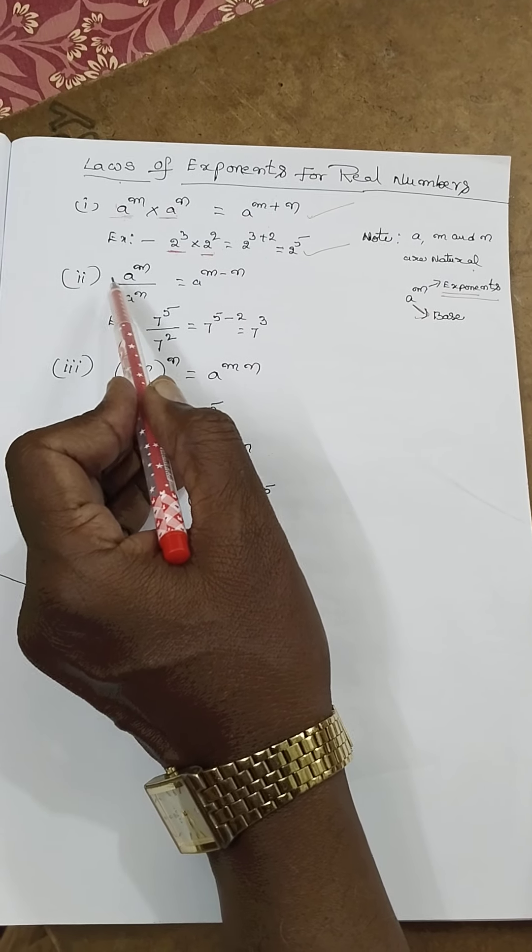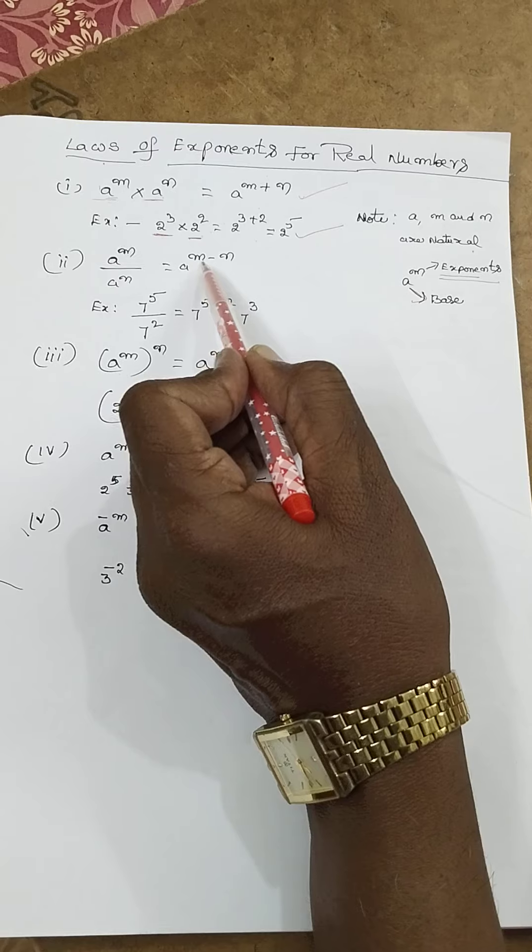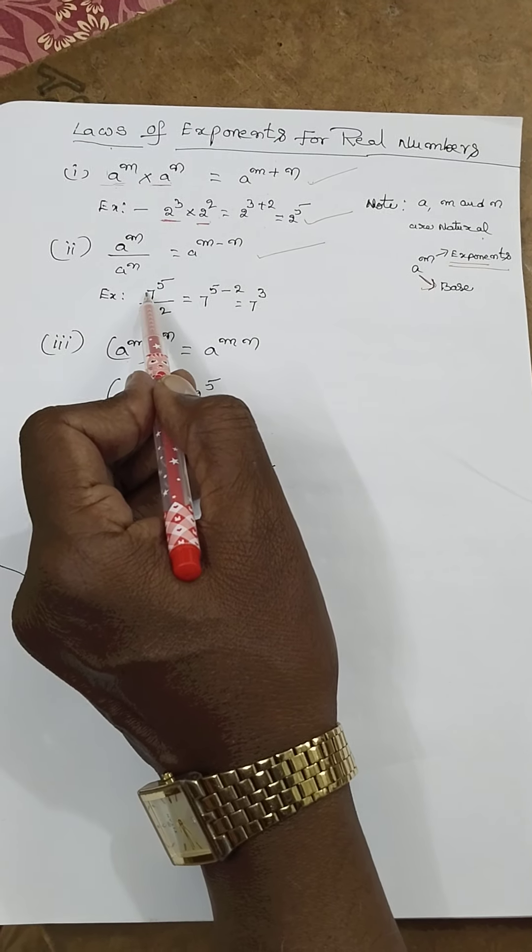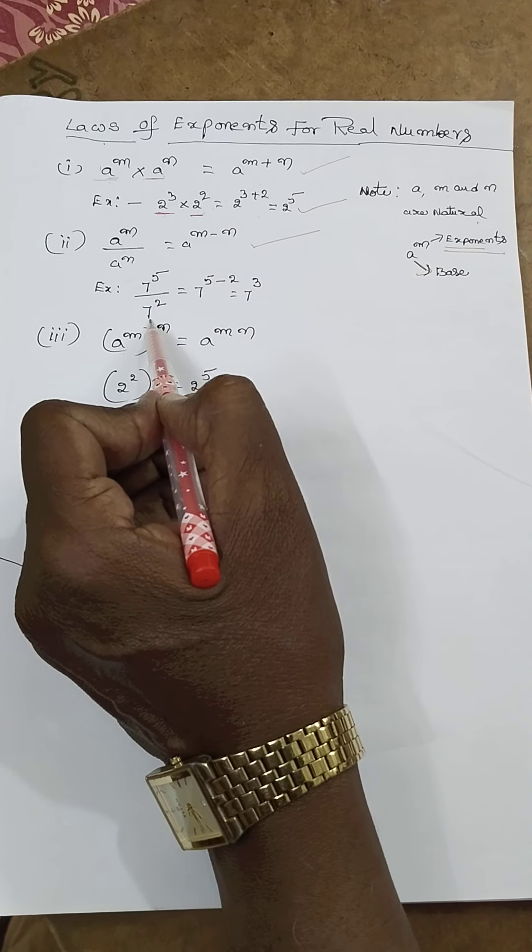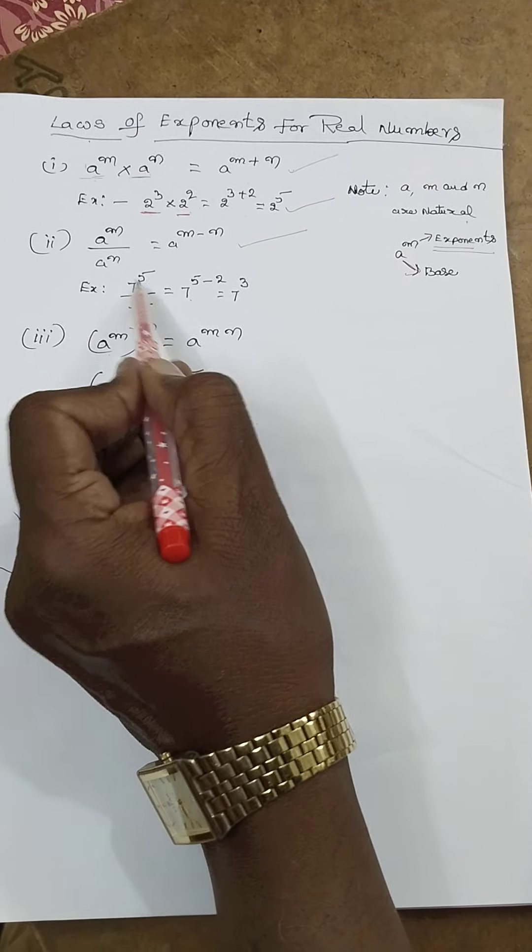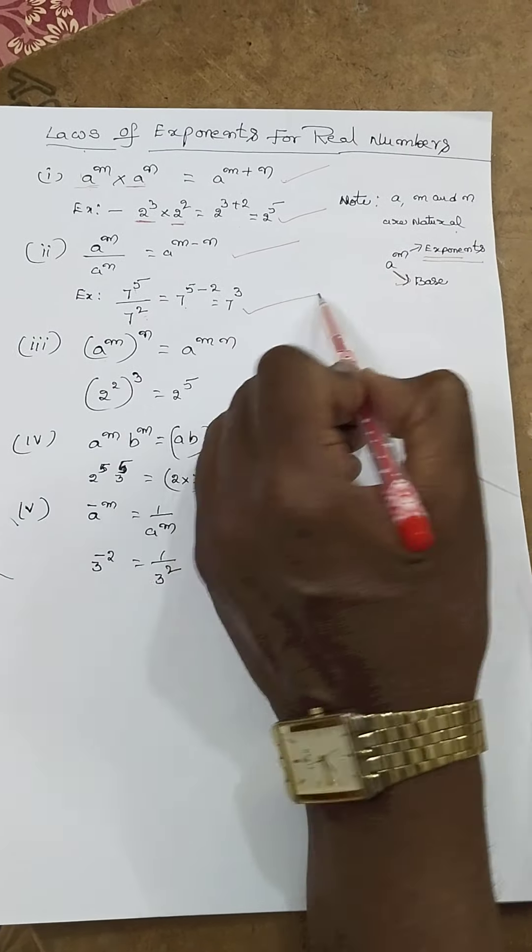Second exponent: a^m ÷ a^n = a^(m-n). Take example, 7^5 ÷ 7^2. Here m is 5, n is 2. 7^(5-2) = 7^3.